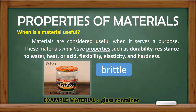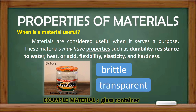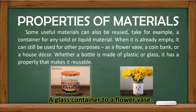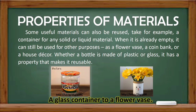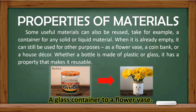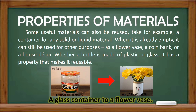An example is a glass container. Some useful materials can also be reused. Take for example a container for any solid or liquid material. When it is already empty, it can still be used for other purposes, as a flower vase, a coin bank, or a house decor. Whether a bottle is made of plastic or glass, it has a property that makes it reusable.